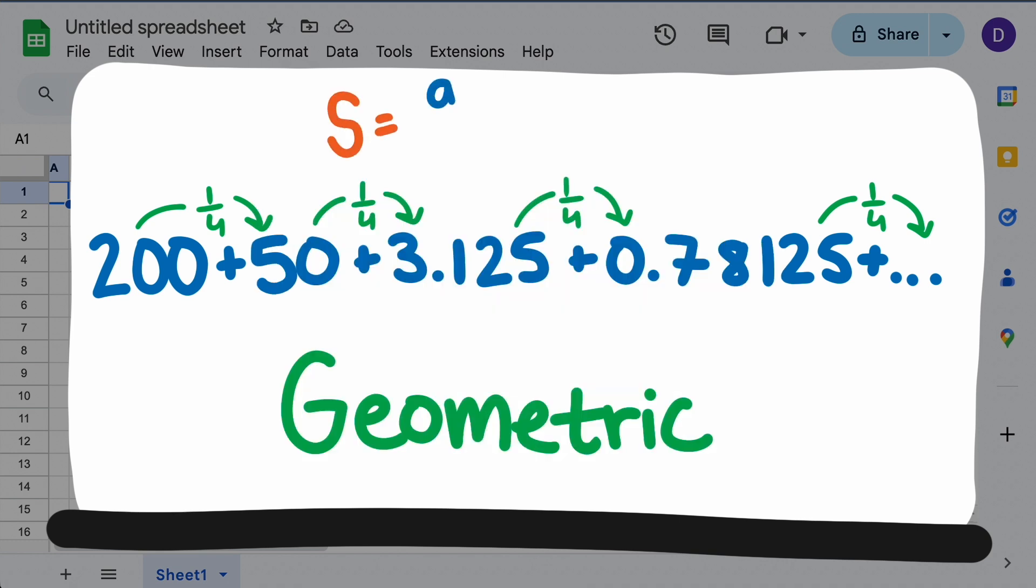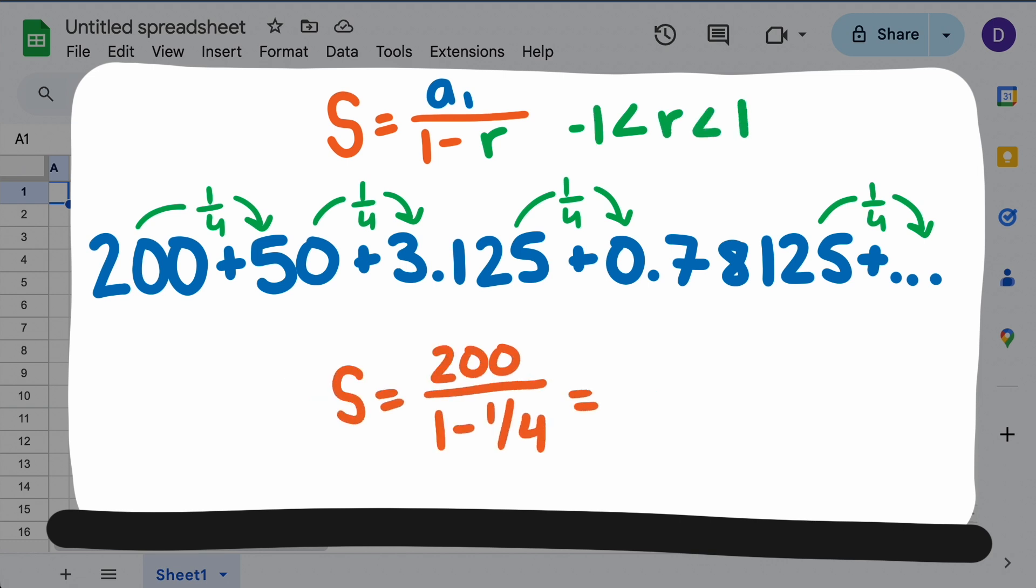This is one of the special cases where we can find the sum of an infinite series using a formula. This formula works any time the multiple is between a negative one and one. In all other cases, the sum of a geometric series is not finite. Using this formula, our sum is 266.66 grams per liter.